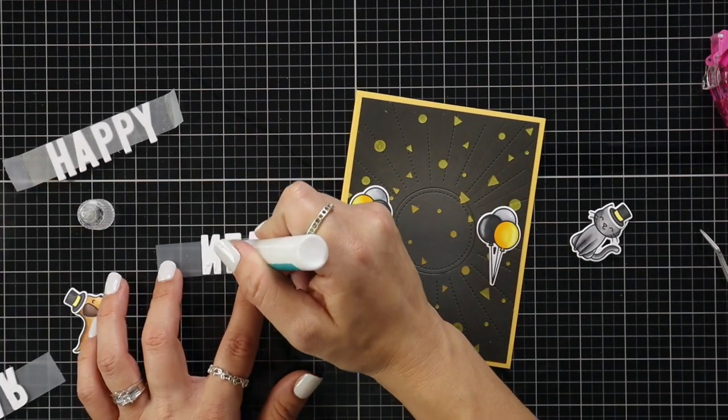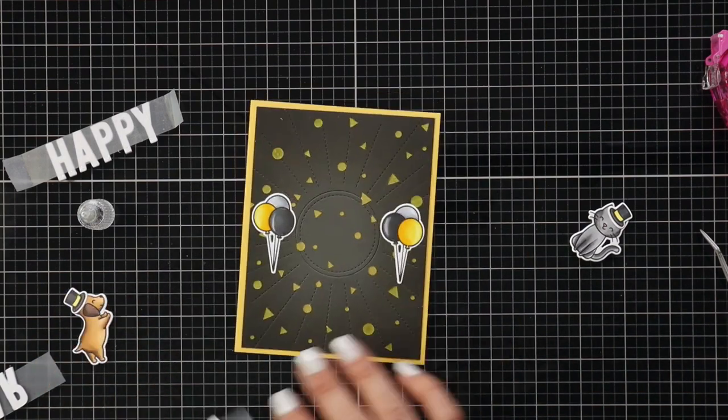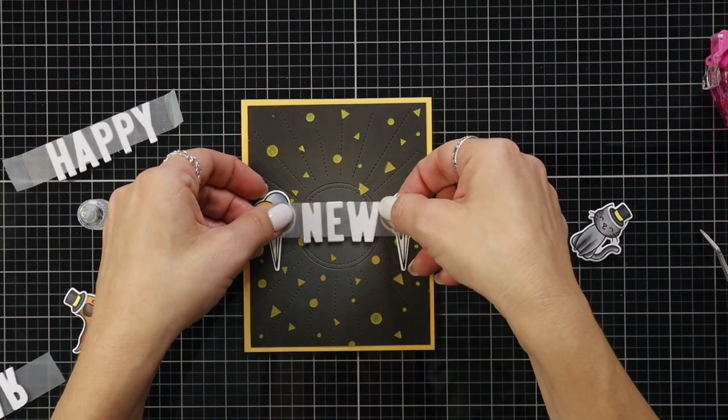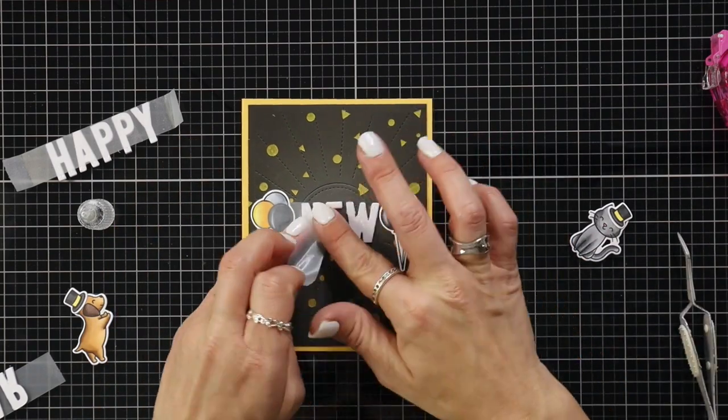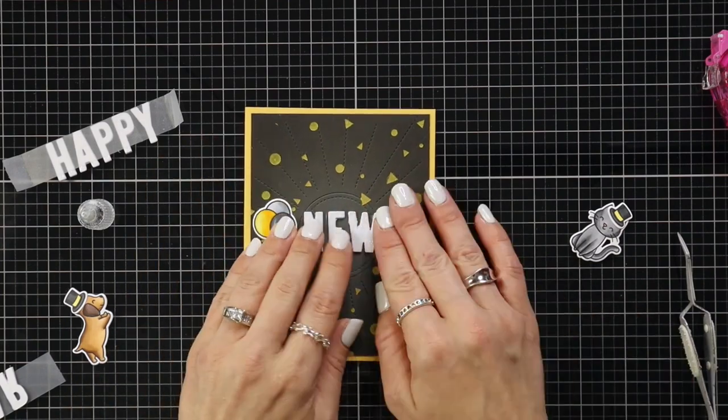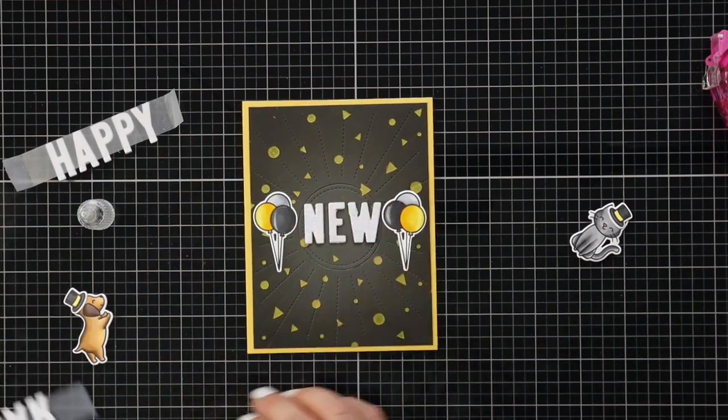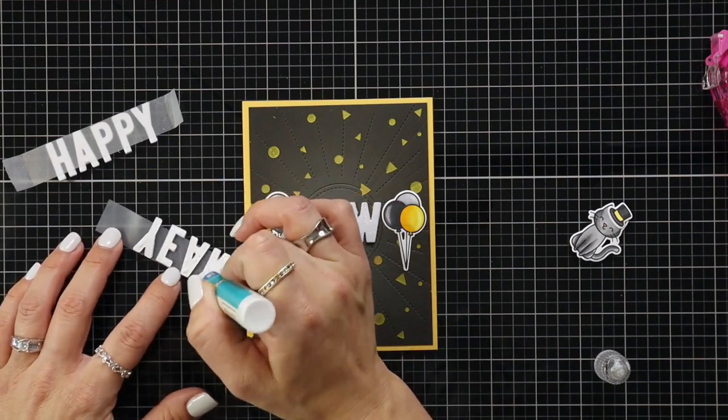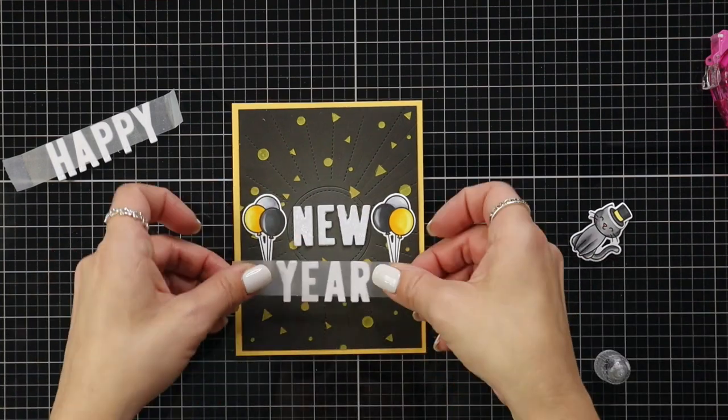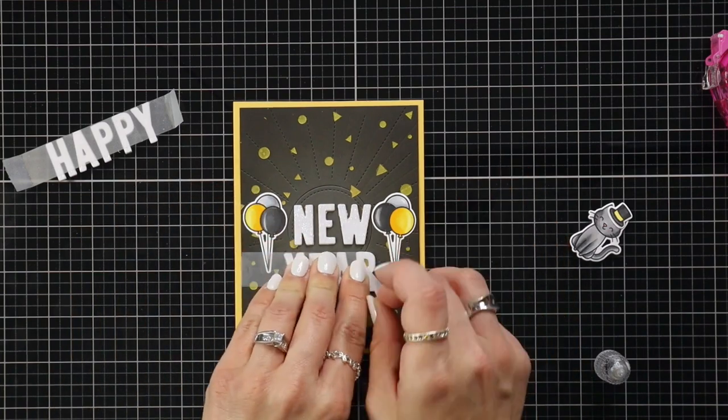You could use really any type of low tack tape but I do recommend something that you can see through so that it helps you line things up. Then I'm just adding liquid glue to the back of that, placing that on the front of my card and then I can peel away that scotch tape. And I was shifting it and just kind of moving it a little bit before it really adheres to the front of the card to make sure I'm getting everything straight and spaced nicely.